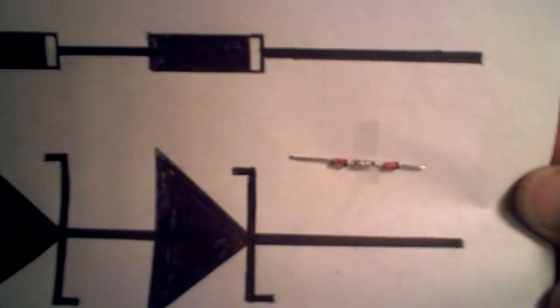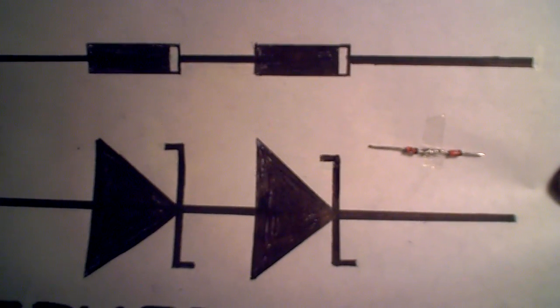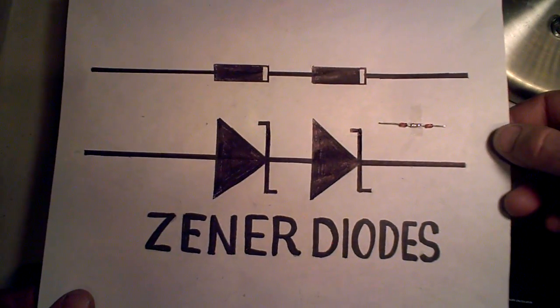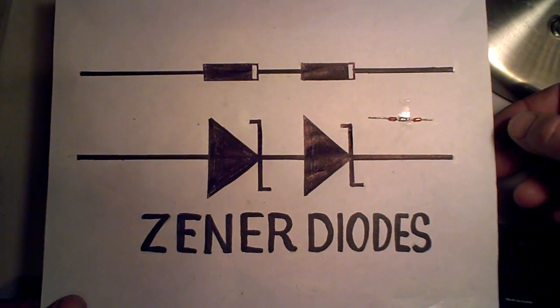The only things you need to make sure of are that you get the polarity right and get the wattage right. If it calls for a 1 watt zener diode, make sure that you use zener diodes that are at least 1 watt.